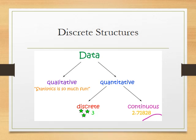In discrete structure, we have data of two types: qualitative and quantitative. Qualitative data describes something in statement form — for example, 'statistics is so much fun' describes a quality. Quantitative data has two types: one is discrete and one is continuous.